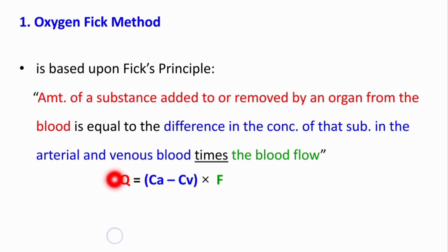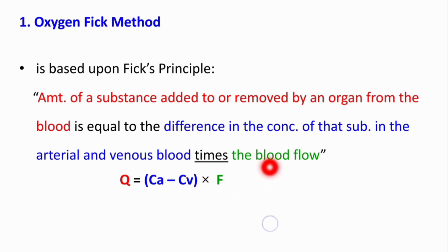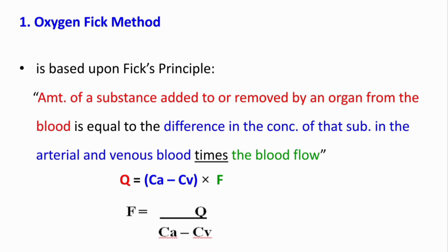So Q is the amount of substance added to or removed by an organ from the blood. It equals the difference in concentration of that substance in arterial (A) and venous (V) blood, times F for blood flow. In this equation, Q is the amount of substance consumed, CA is the concentration of substance in arterial blood, CV is the concentration in venous blood, and F is the blood flow. We can rewrite this as F = Q / (CA − CV).